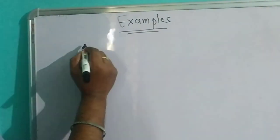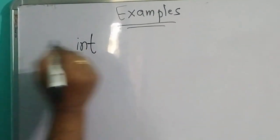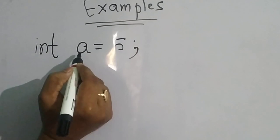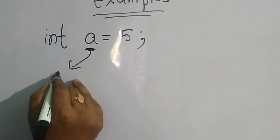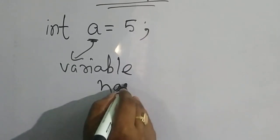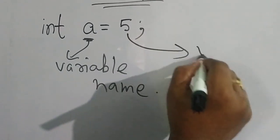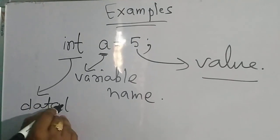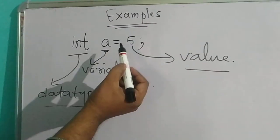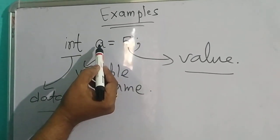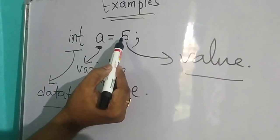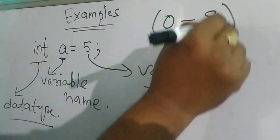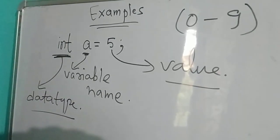First, I am explaining about int. For example, if I write: int a = 5. Here, 'a' is the variable name, 5 is the value, and int is the data type. The explanation is that variable 'a' stores data of value 5, and this 5 is integer type — it comes in between 0 to 9 — that's why the data type is int.